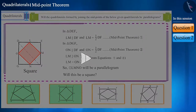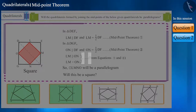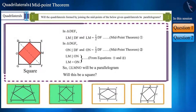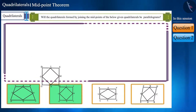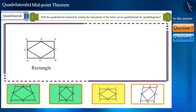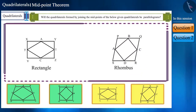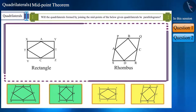Look at this quadrilateral carefully — will it be a square? Pause the video and with the help of a scale and protractor, find the measurements of its sides and angles. You will see that it is also a square. Similarly, try yourself for the rectangle and rhombus, and come to a conclusion with the help of your classmates and teachers.